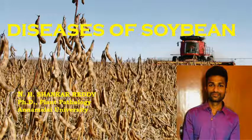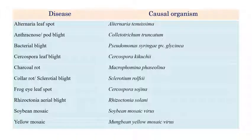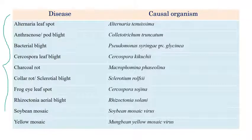Diseases of soybean. The scientific name of soybean is Glycine max. My name is Yen Chankar Reddy and I am doing a PhD in plant pathology at Animal University. Now we will see the list of important diseases in soybean.